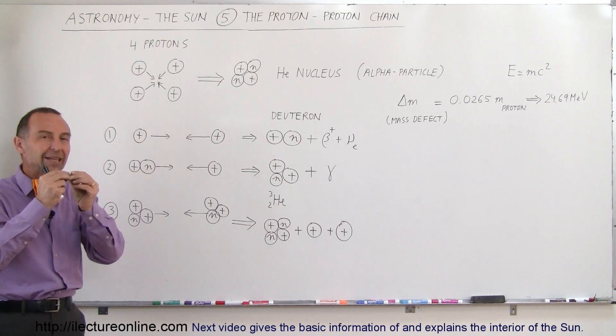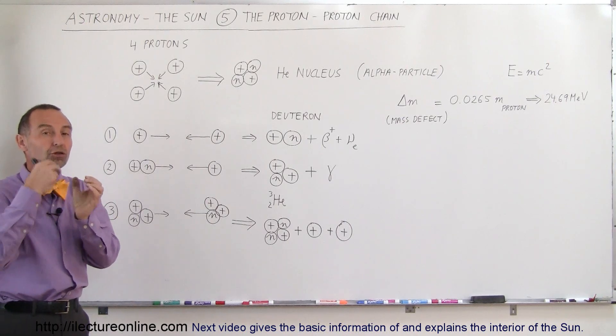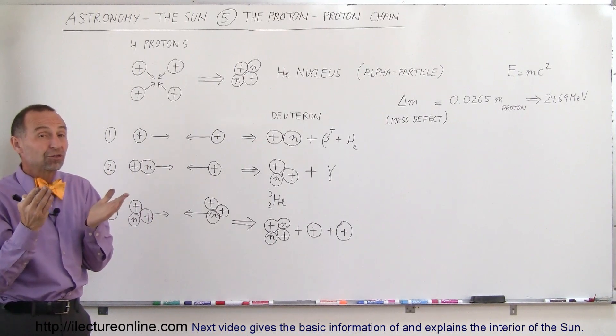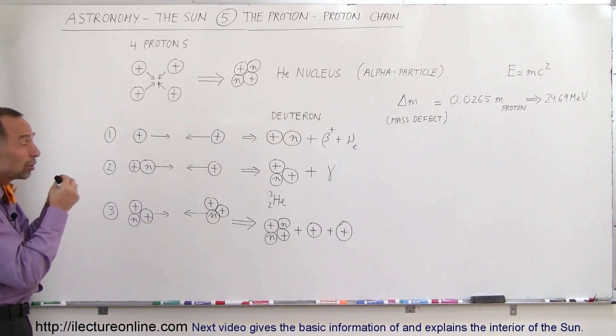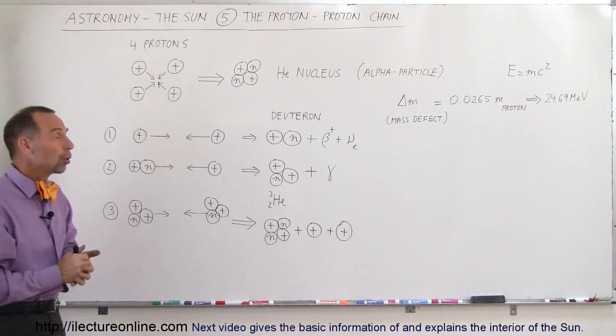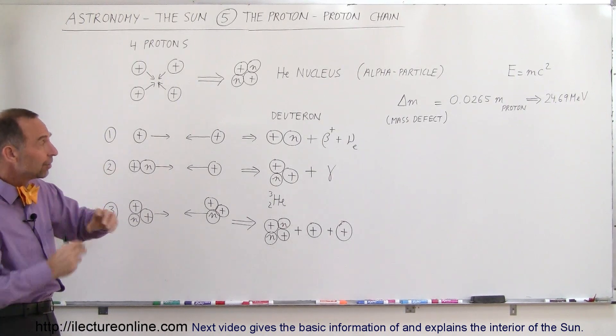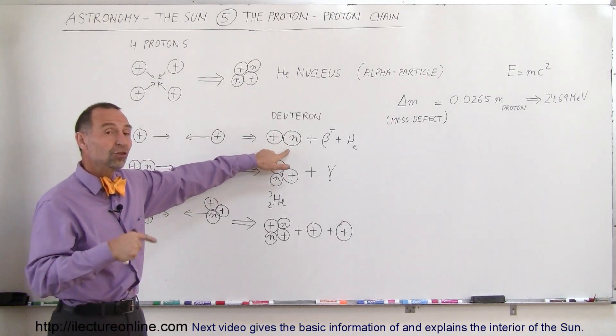When they get close enough together, there is a force called the nuclear strong force that holds the two together and overcomes the repulsive forces, the electrical repulsive forces between the two charges of the two protons. At that point, what happens is the two come together. One of the two turns into a neutron.